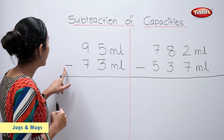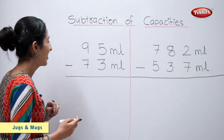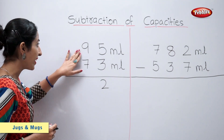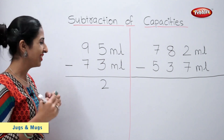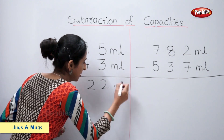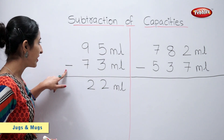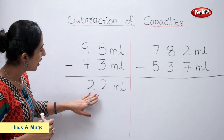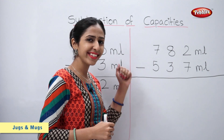5 minus 3 is equal to 2. 9 minus 7 is equal to 2. So, 95 ml minus 73 ml is equal to 22 ml. Let's solve this example.